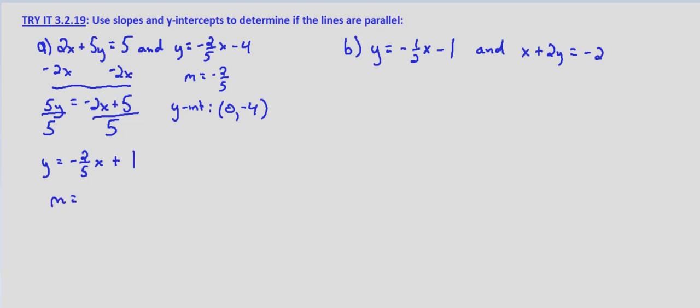So the slope is negative 2 fifths. y equals mx plus b, so m is negative 2 fifths. And our y-intercept is 0, 1. b is the y-intercept, and in this case b is 1.